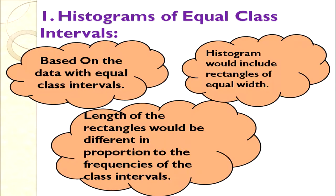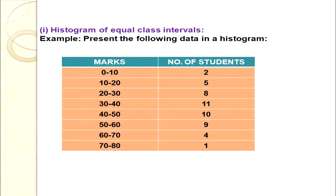There will be no distance between the bars or rectangles. Let's see an example. The data is a frequency distribution with a continuous series where the class interval gap is the same throughout — so it is histogram of equal class intervals. On the x-axis we have marks: 0, 10, 20, 30, 40, 50, 60, 70, 80. On the y-axis we have frequencies — number of students.